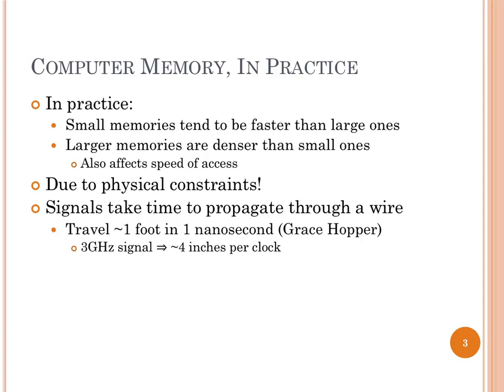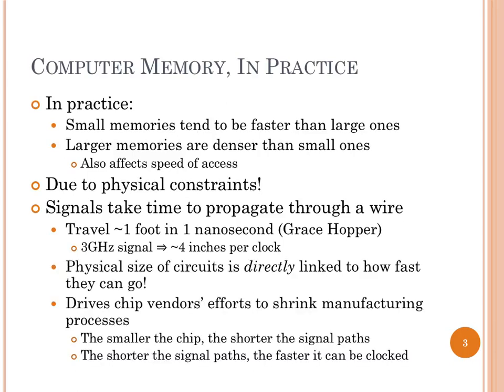Signals do take some time to propagate through a wire. Grace Hopper would go to lectures and hand out foot-long pieces of wire and say, this is a nanosecond — that's how far a signal can propagate in one nanosecond, with nothing else going on. If you have a three gigahertz processor, you'll see about four inches per clock is how far signals are able to propagate per clock. So if I make a circuit small, signals have shorter distances to propagate through, and that means I can make them go faster.